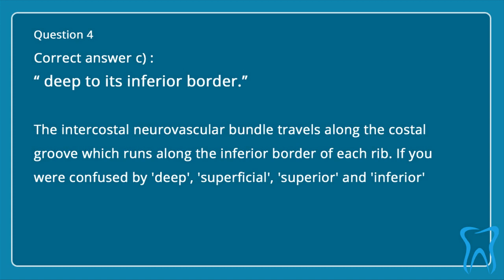The intercostal neurovascular bundle travels along the costal groove, which runs along the inferior border of each rib. If you were confused by deep, superficial, superior, and inferior, refer back to chapter 1.